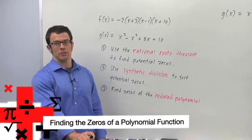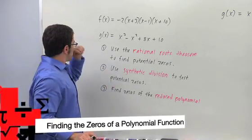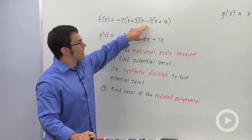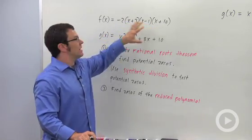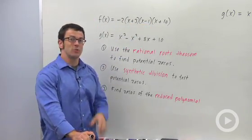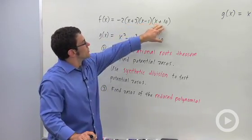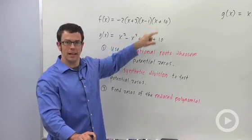We're finding the zeros of polynomial functions. Let me show you two examples. f of x equals negative 2 times x plus 3, x minus 1, x plus 10. If you're given a polynomial like this, it's really easy to find the zeros because each factor contributes a zero. So you'll have negative 3, 1, and negative 10.